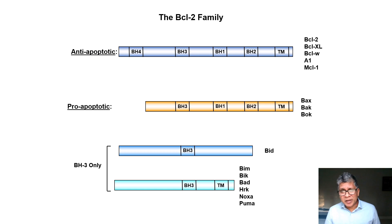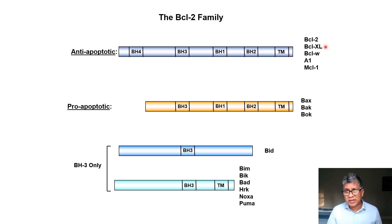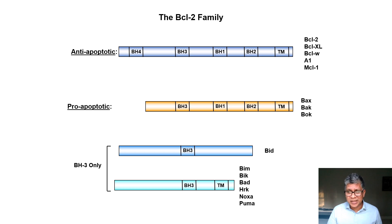The BCL2 family — remember in C. elegans there's just one, CED-9, which is anti-apoptotic. However, in mammalian cells, the BCL2 family has three subcategories. One is the anti-apoptotic family members, which includes BCL2 and BCLXL, among others. These two are the best studied and they are all anti-apoptotic, meaning they inhibit apoptosis.